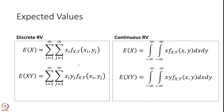Expected values are also defined accordingly. In the discrete case, the expected value of X is the summation over i from 1 to infinity and j from 1 to infinity of xi times the joint probability mass function of X and Y, summed over all j. Similarly, the expected value of XY uses xi*yj, and in the continuous case you integrate over both x and y. From this you can derive the expected value of g(X) or any function h(X, Y).